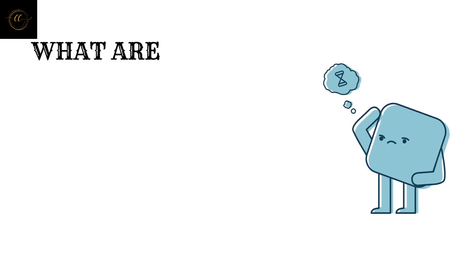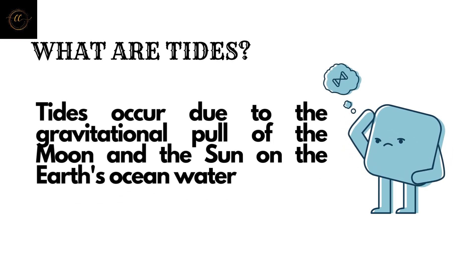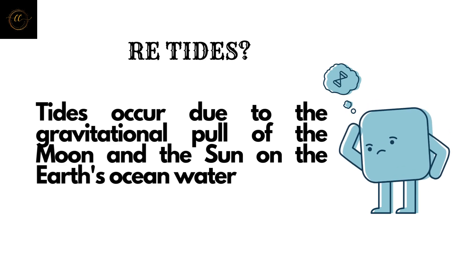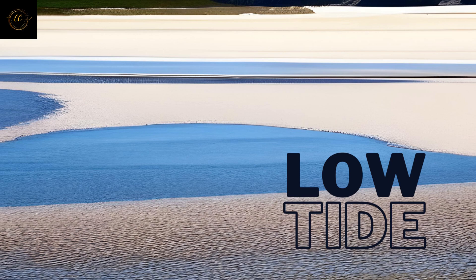What are tides? Tides occur in beaches and coastal areas due to the gravitational pull of the moon and the sun on the earth's ocean water. High tides mean when the ocean's water level is closer to the land, covering more land than usual. Low tides mean when the ocean's water level is lower, revealing more land.